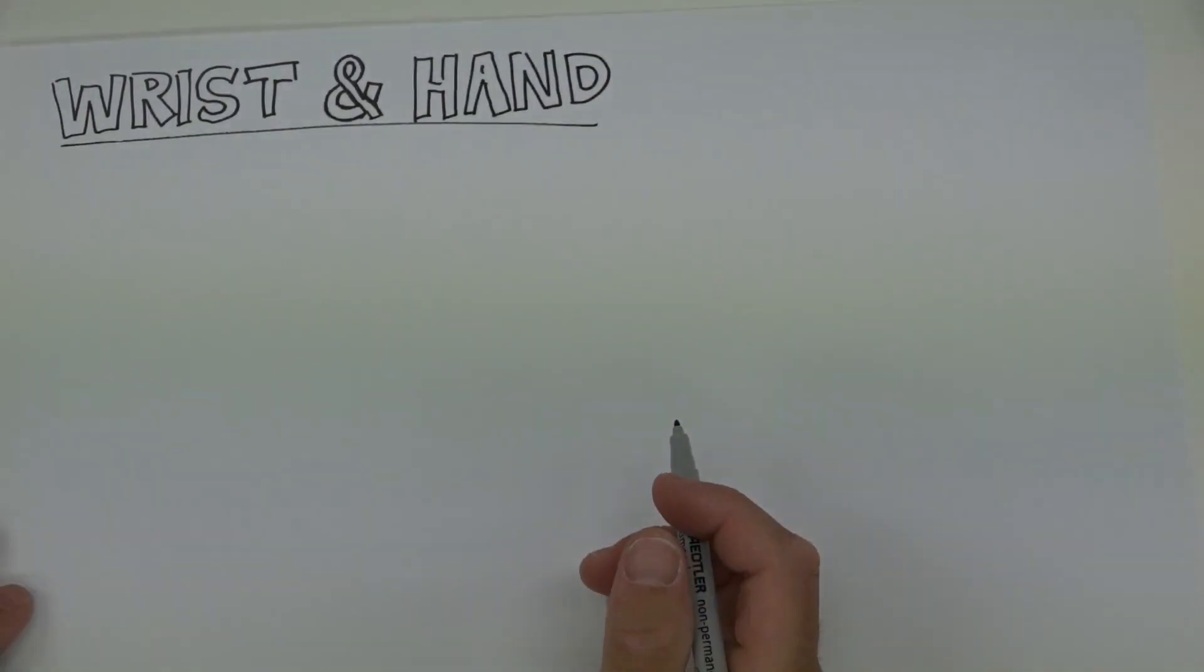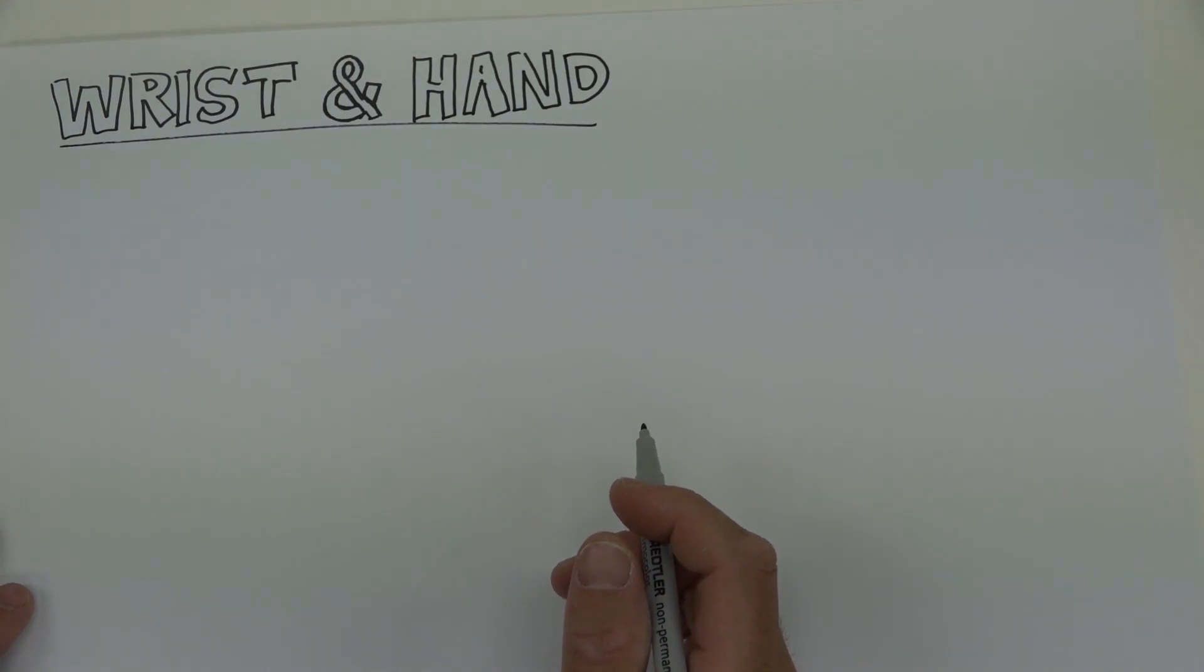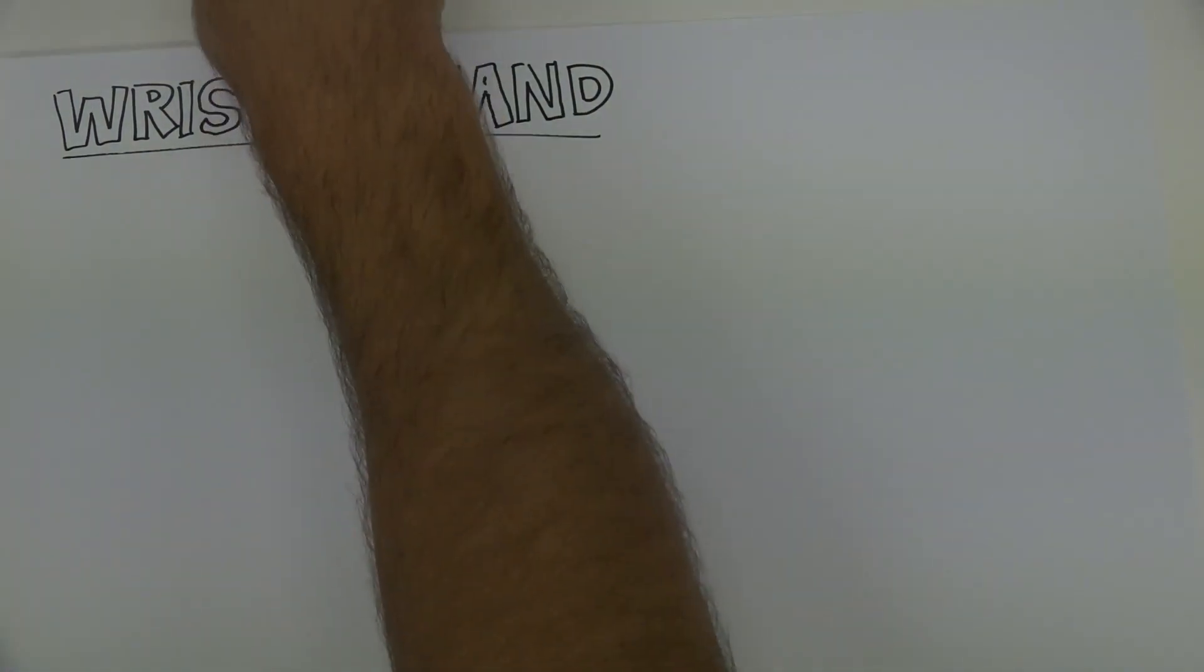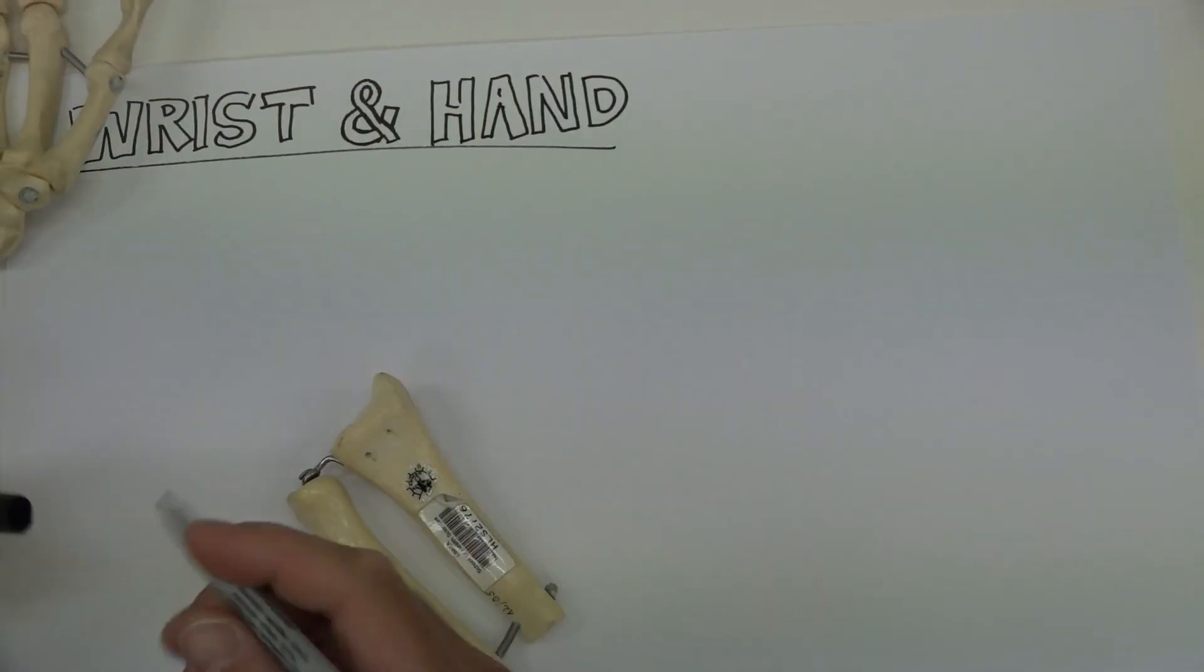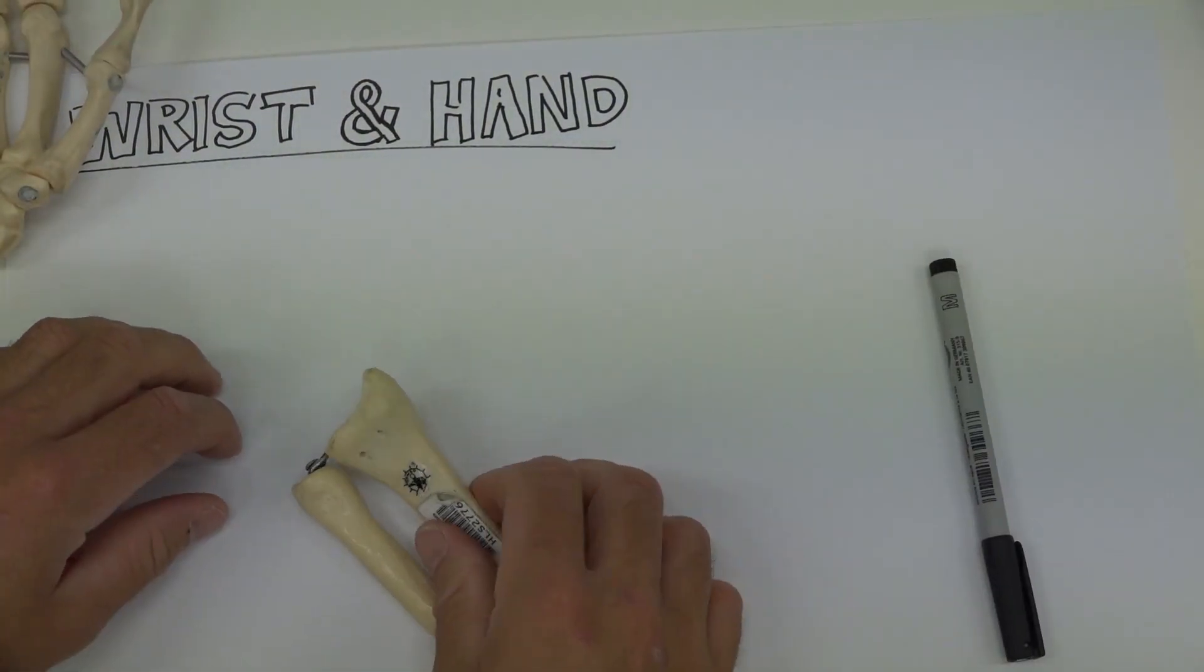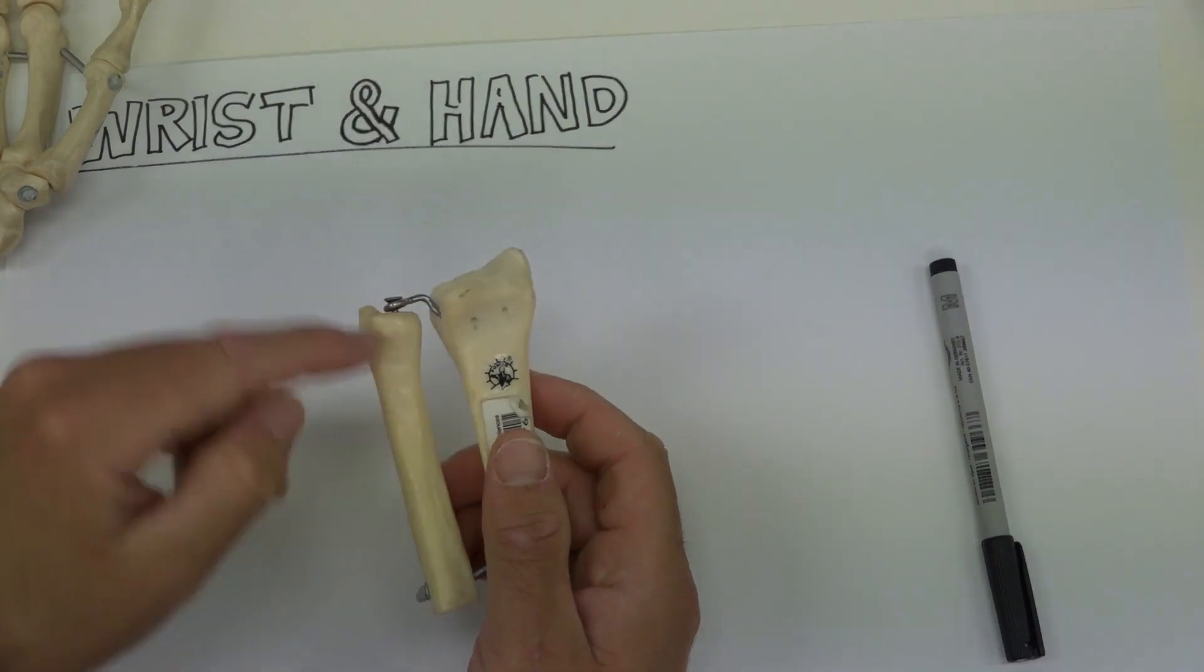Welcome to a short video on the wrist and the hand. If we look at the two sets of bones here to start with, the wrist joint, the distal end of the radius and the ulna.